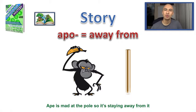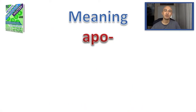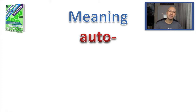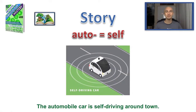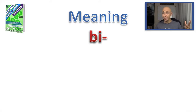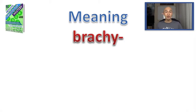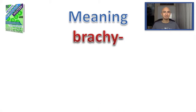Apo — what does that mean? That's right: away from. An ape is mad at the post so it stayed away from it. Remember the visual triggers we created. Auto — what does that mean? That's pretty easy: it means self. Next one is bi — pretty sure you know this one as well: that means two. And brachy — what was brachy? It means short.